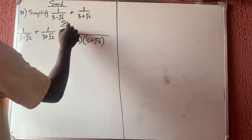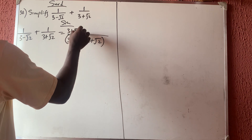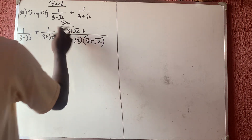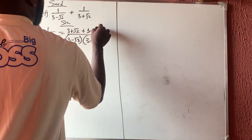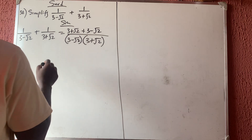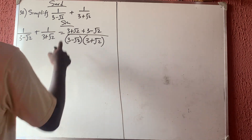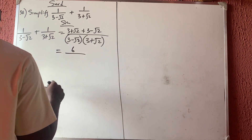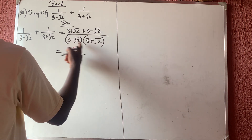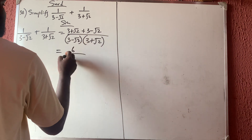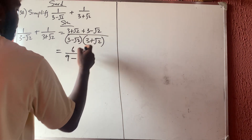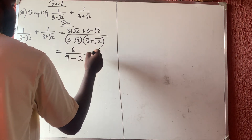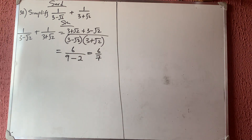When both terms divide the LCM, this cancels this, so you are left with (3 plus √2) plus (3 minus √2). The √2 terms cancel, and 3 plus 3 gives 6 on the numerator. The denominator is a difference of two squares: 3 times 3 gives 9 minus √2 times √2 which is 2, giving 7. So the answer is 6 over 7.